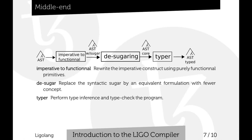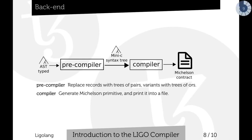After the imperative-to-functional step, we have a desugaring phase that removes syntactic sugar — convenient shorthand for complex formulas. For example, tuples are a convenient way to write records with fields 0 to n, and if-then-else is a convenient way to do matching on booleans. The desugaring phase removes those extra constructs and replaces them with their equivalents. Then we arrive at the typer, which performs type inference and type checking. If the compiler produces no error, the program is correct and we can proceed to write it in the target language.